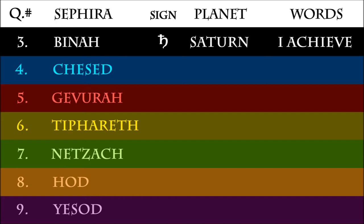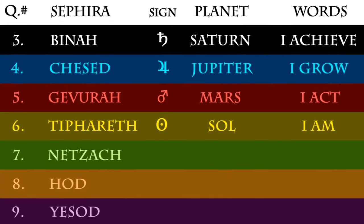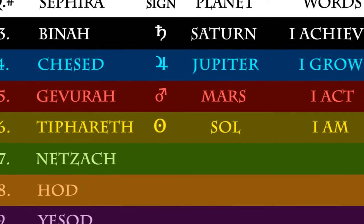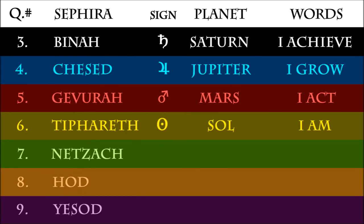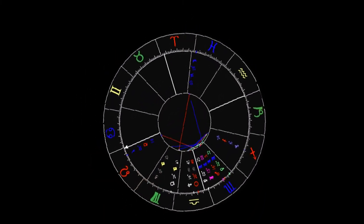Saturn's words are: I achieve. Next up we have Jupiter, who says: I grow. Then we have Mars, who says: I act. Then we have the Sun, or Sol. He says: I am. The Sun represents the self. So that explains where the sun appears in your zodiac chart — if it's in Pisces, your mantra would be 'I am what I believe,' because Pisces says 'I believe.'